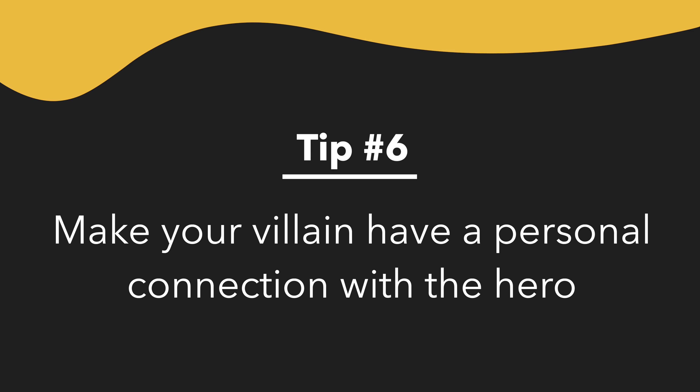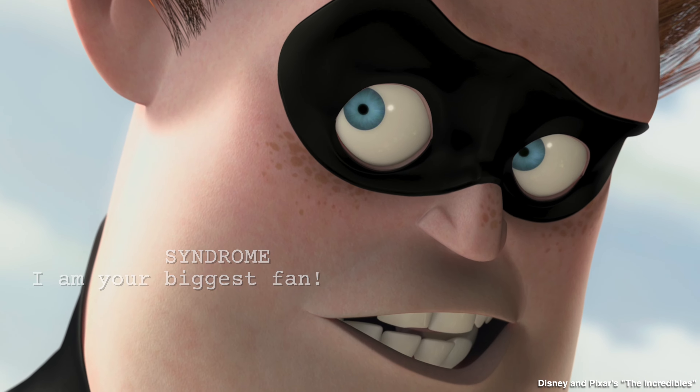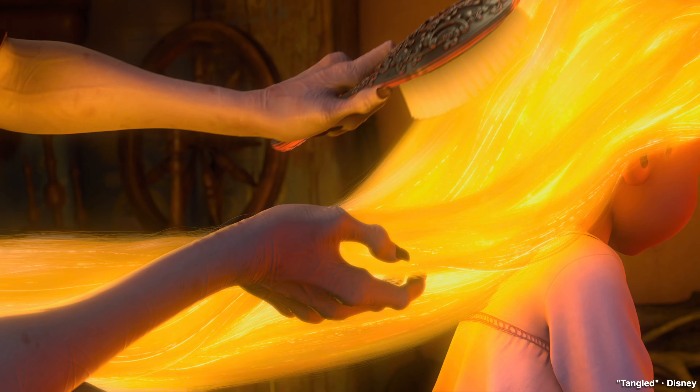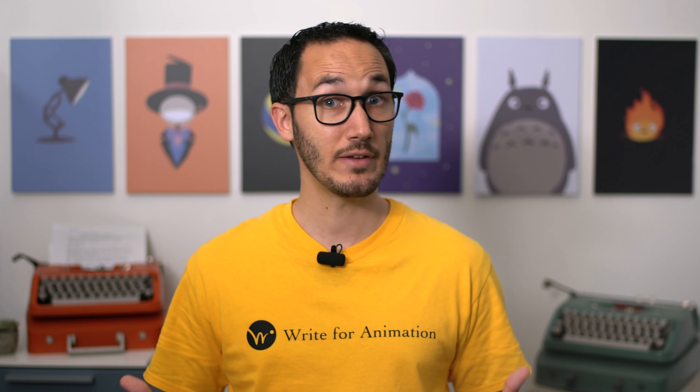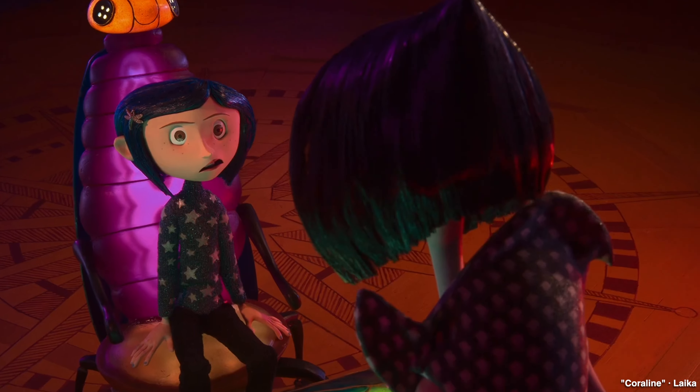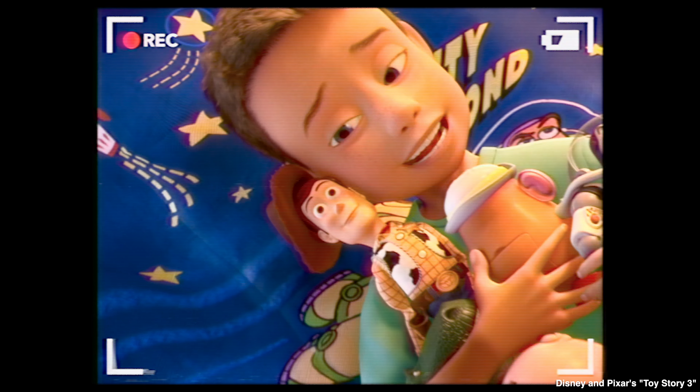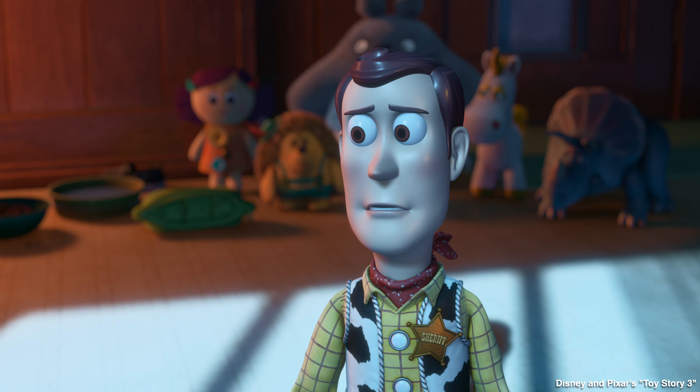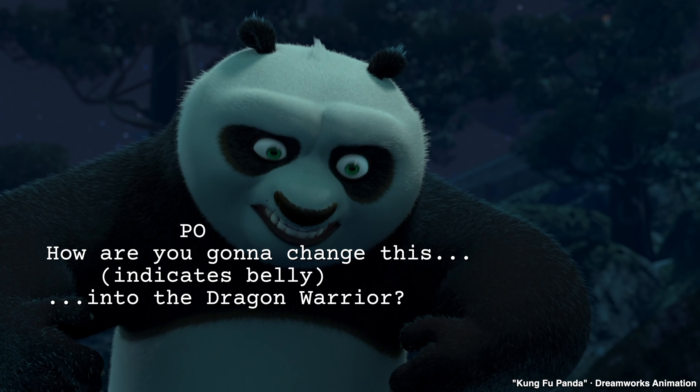Tip number six: Make your villain have a personal connection with the hero. Mr. Incredible was Syndrome's idol, Mother Gothel is Rapunzel's stepmother, and Scar was Simba's uncle. Having this close connection will help strengthen your villain-hero relationship — arguably the most important relationship in your story. If not a literal connection, the villain can stand for something very personal to the hero, so even though they've never met before, it feels personal. Lotso strikes a chord in Woody because deep down Woody doubts Andy's love, and Lotso represents Woody's fears. Although Tai Lung is not related to Po in any way, he fuels Po's insecurities about not becoming a confident, strong Kung Fu master. Riling up the protagonist's emotions keeps the audience invested.